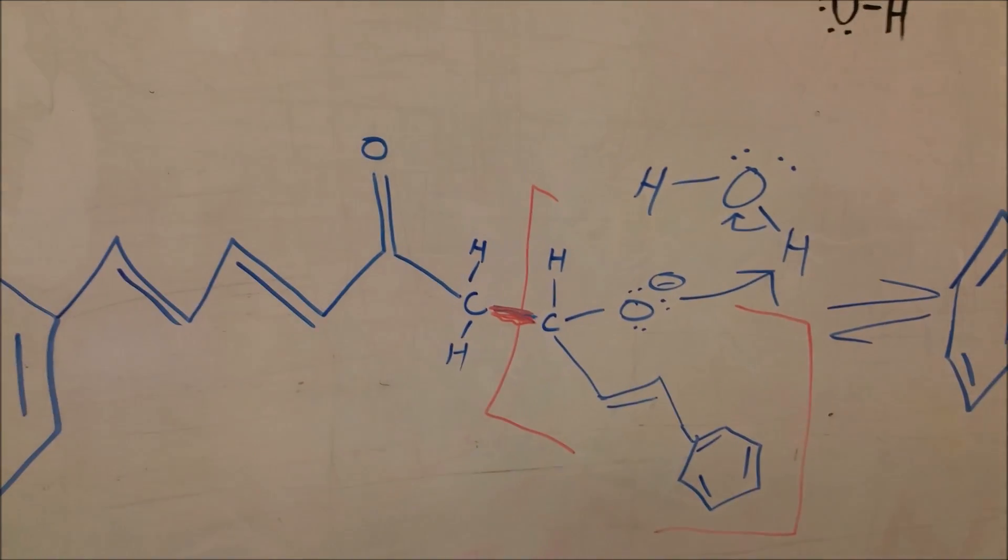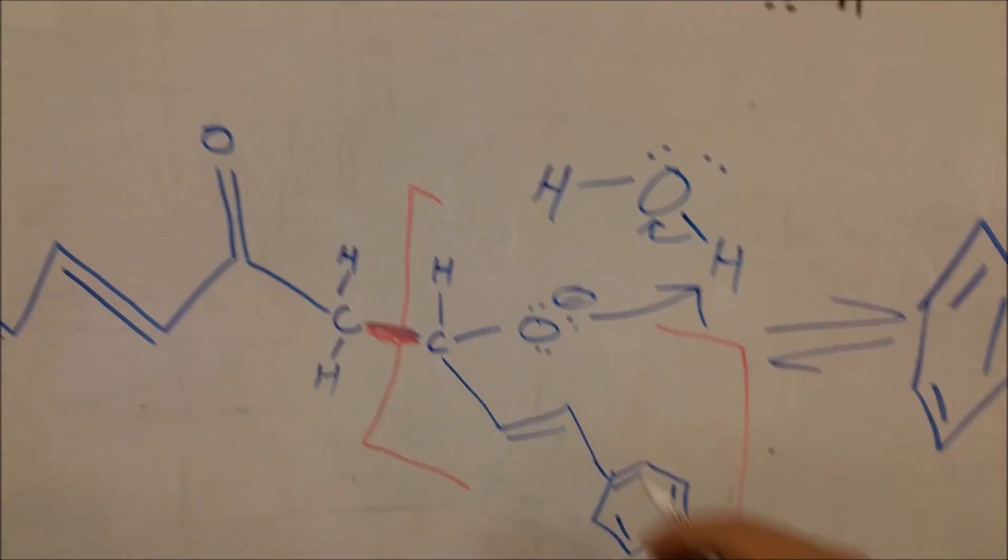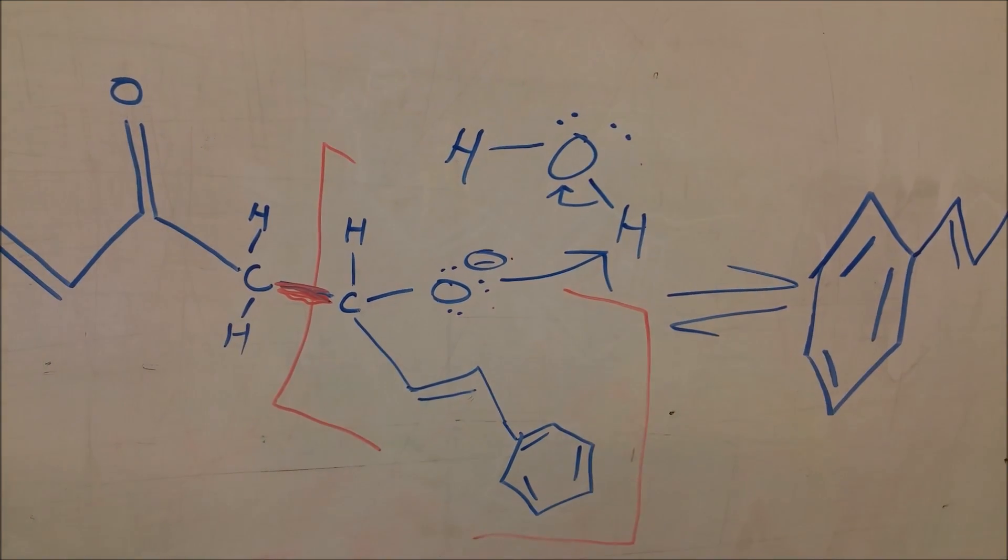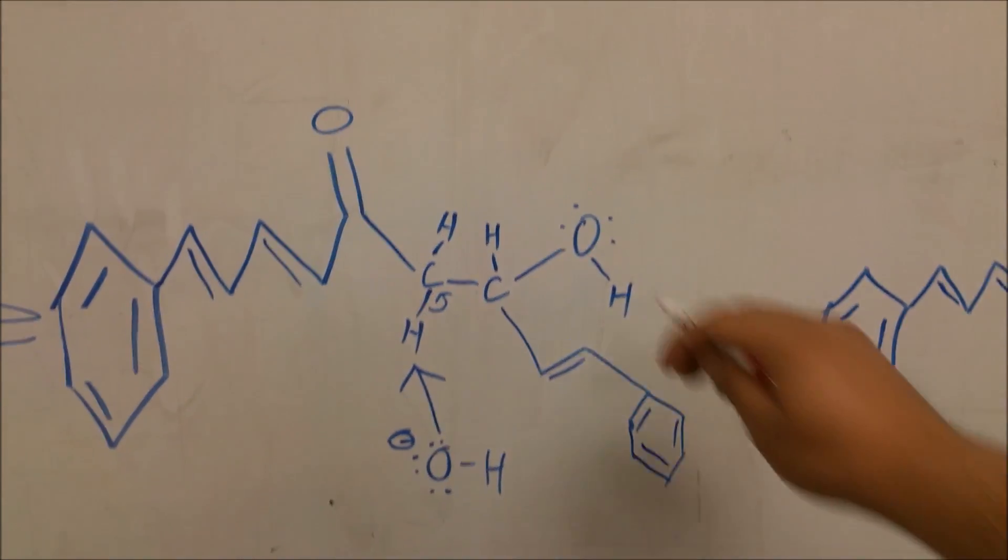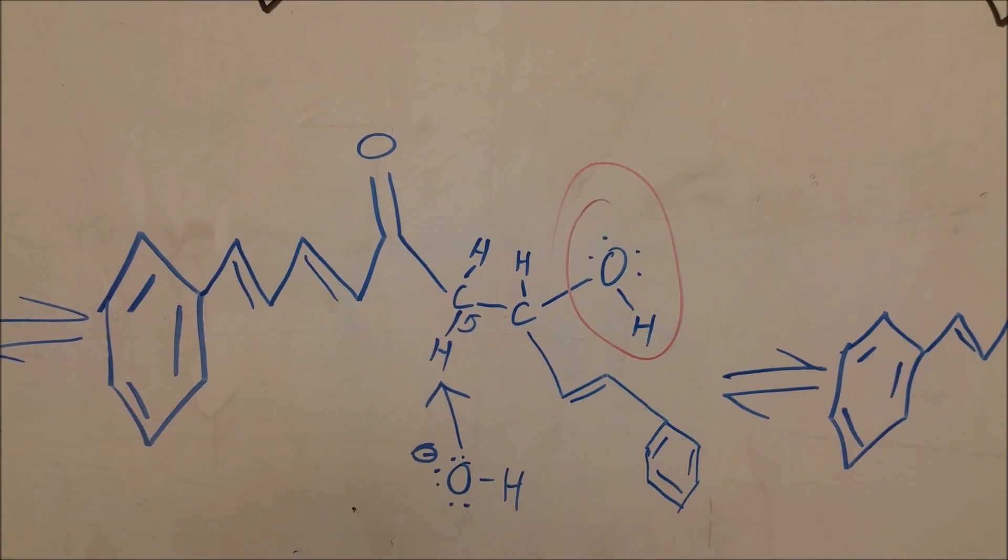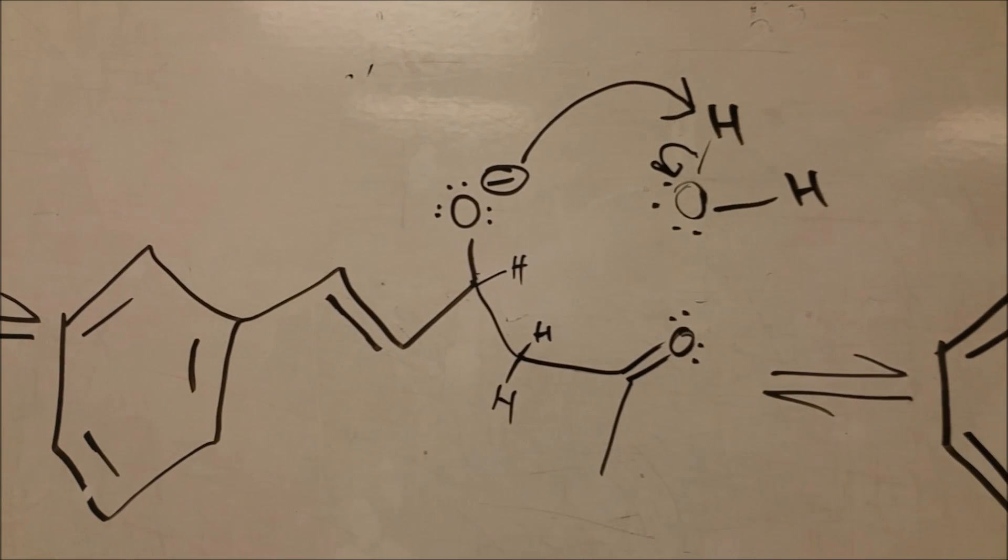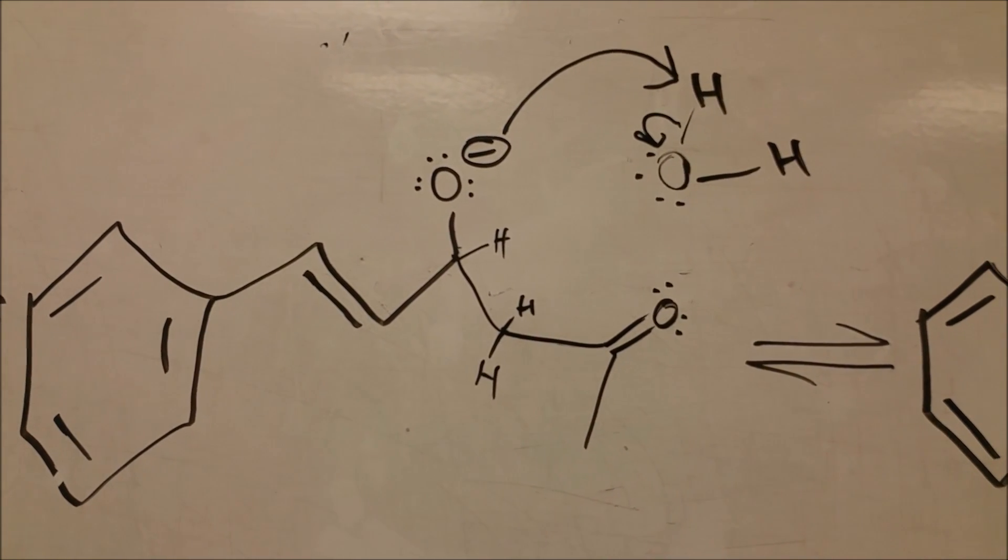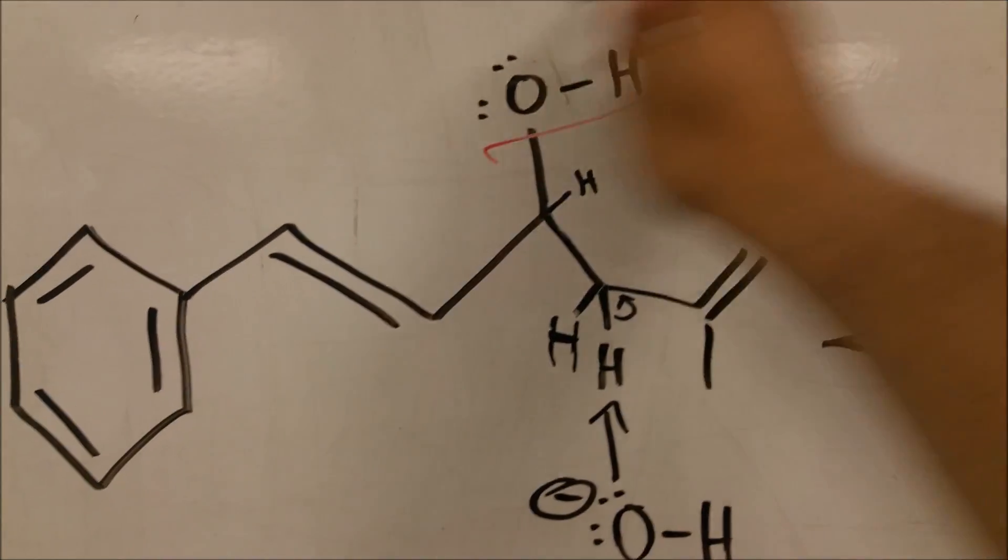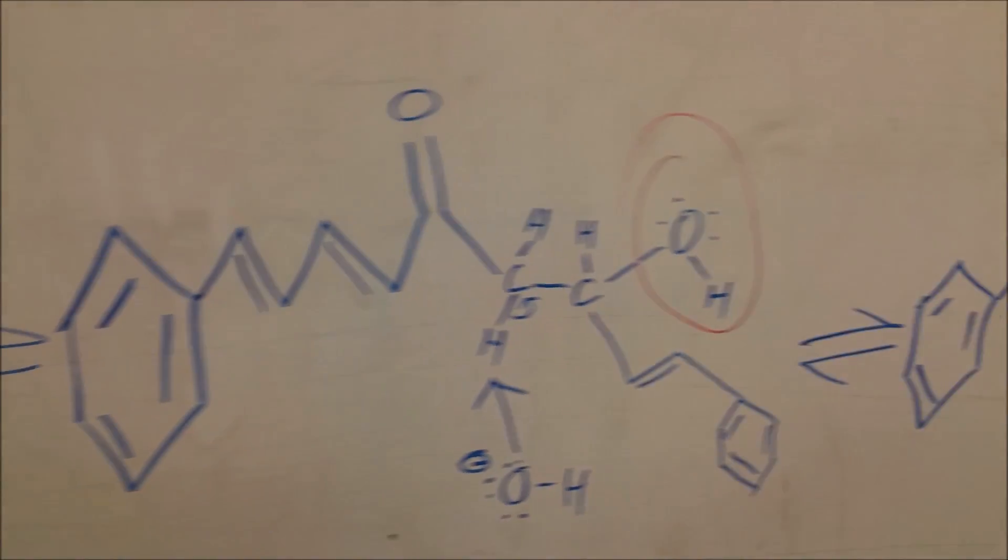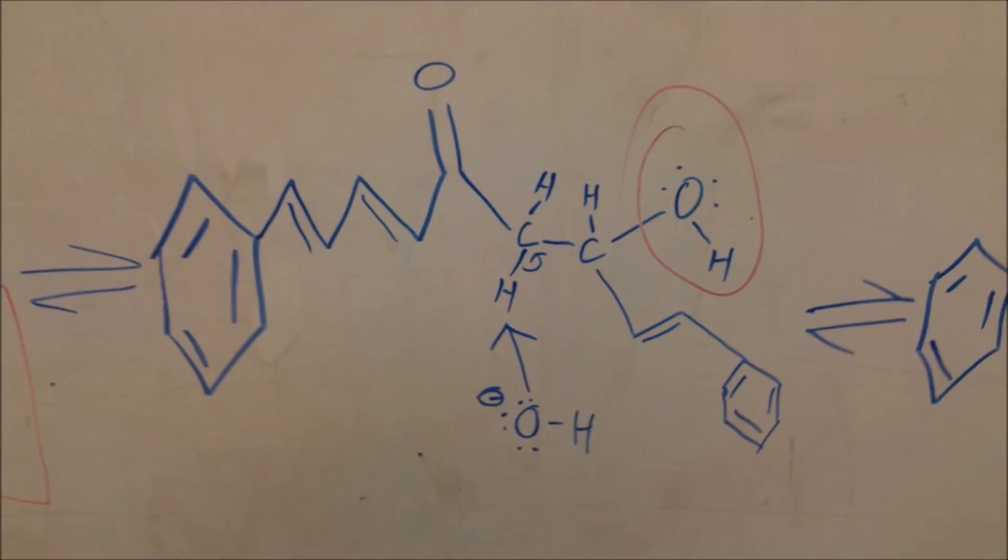Now that they're attached, we have water in the solution, and this oxygen with the negative charge will take away a hydrogen to form that alcohol group. Just like in the reaction from the previous example. Right? We have the oxygen, take the hydrogen, formed the alcohol group. Now that we have the alcohol group established, what happens next?